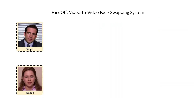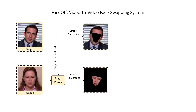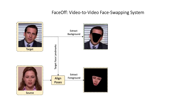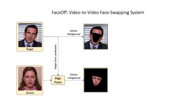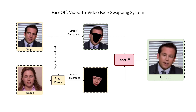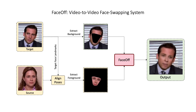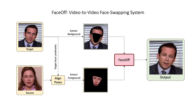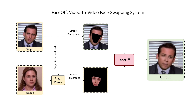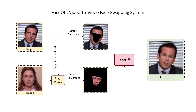Face Off takes two videos as input: the background and pose of the target video, and the foreground of the source face video. Face Off then takes both of these inputs and generates a coherent and meaningful output meeting all the required constraints.